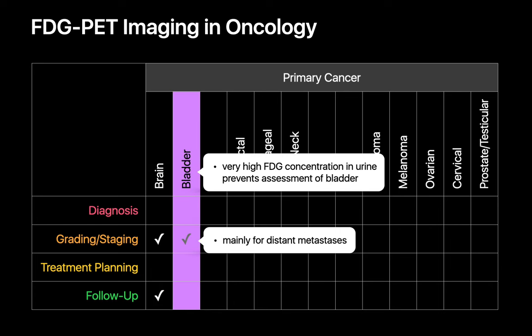FDG PET-CT is of limited value with cancers of the urinary bladder, since all of the urine inside the bladder lumen contains extremely high concentrations of FDG, which will tend to obscure any abnormal uptake that might be present within the bladder wall. However, folks may sometimes use FDG PET-CT when searching for evidence of distant metastases during staging.